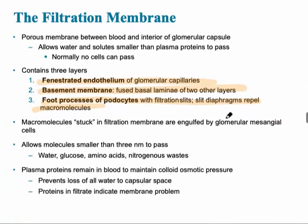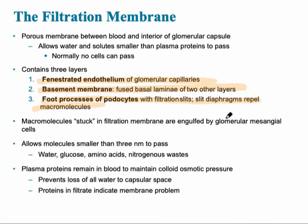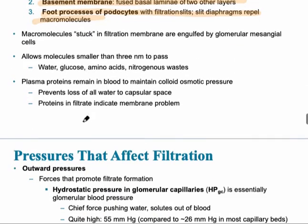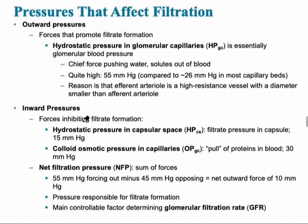The three important layers of the filtration membrane are the fenestrated endothelium, the basement membrane, and the foot processes of the podocytes. The filtration membrane separates the blood in the glomerular capillaries from the filtrate in the capsule. The hydrostatic pressure pushing outward is very high — about 55 millimeters of mercury, which is roughly twice what it normally would be in other capillary beds, which can damage thin endothelial cells.